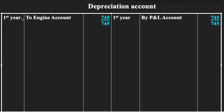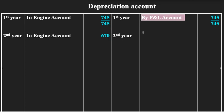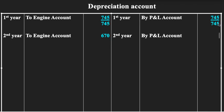For the second year in the Depreciation Account: To Engine Account 670 rupees on the debit side; By Profit and Loss Account 670 rupees on the credit side. Both sides are 670 rupees, so the account is closed for the second year.